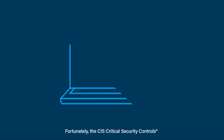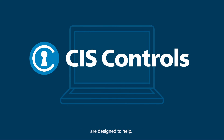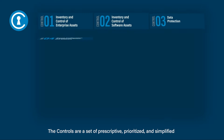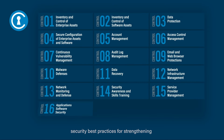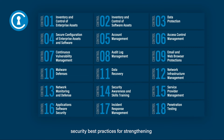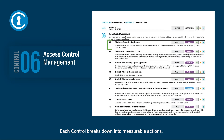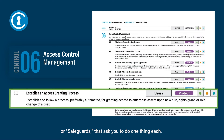Fortunately, the CIS Critical Security Controls are designed to help. The controls are a set of prescriptive, prioritized, and simplified security best practices for strengthening your cybersecurity posture. Each control breaks down into measurable actions or safeguards that ask you to do one thing each.